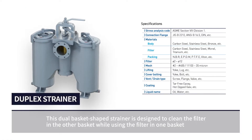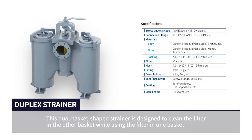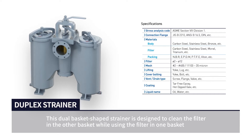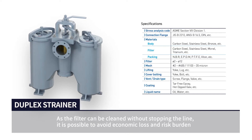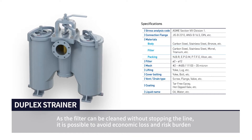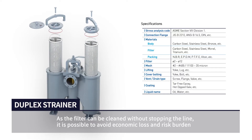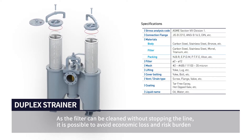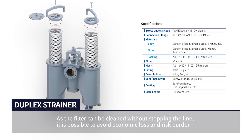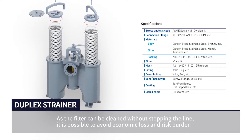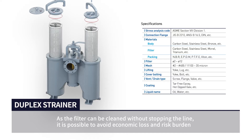This dual basket-shaped strainer is designed to clean the filter in the other basket while using the filter in one basket. As the filter can be cleaned without stopping the line, it is possible to avoid economic loss and risk burden.